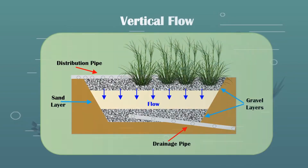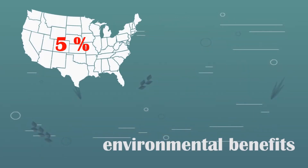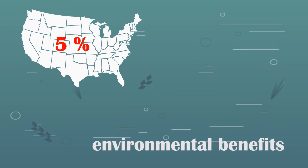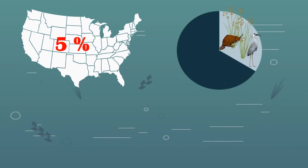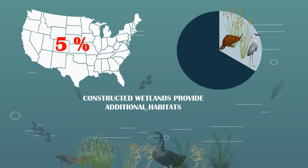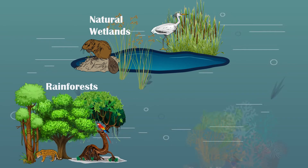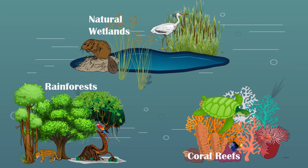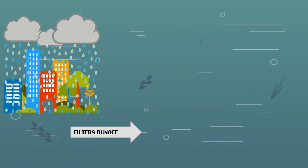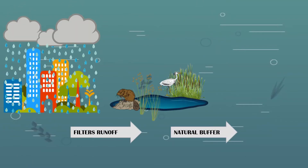Natural wetlands only make up five percent of the lower 48 states, but more than one-third of threatened and endangered species live only in wetlands. Constructed wetlands can potentially offer a greater number of habitats for these animals. Natural wetlands are some of the most biologically productive natural ecosystems in the world, comparable to tropical rainforests or coral reefs.